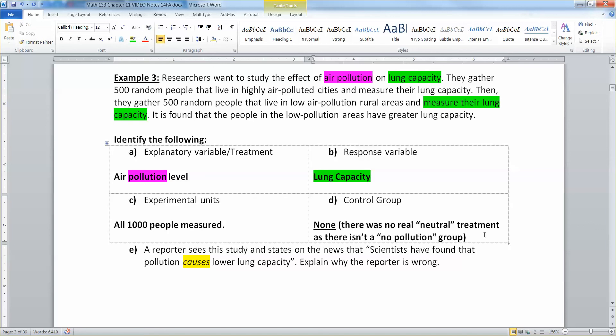Now a reporter sees this study and states on the news, scientists have found that pollution causes lower lung capacity. Causing. Ooh, that's dangerous. Now explain why this reporter is wrong.